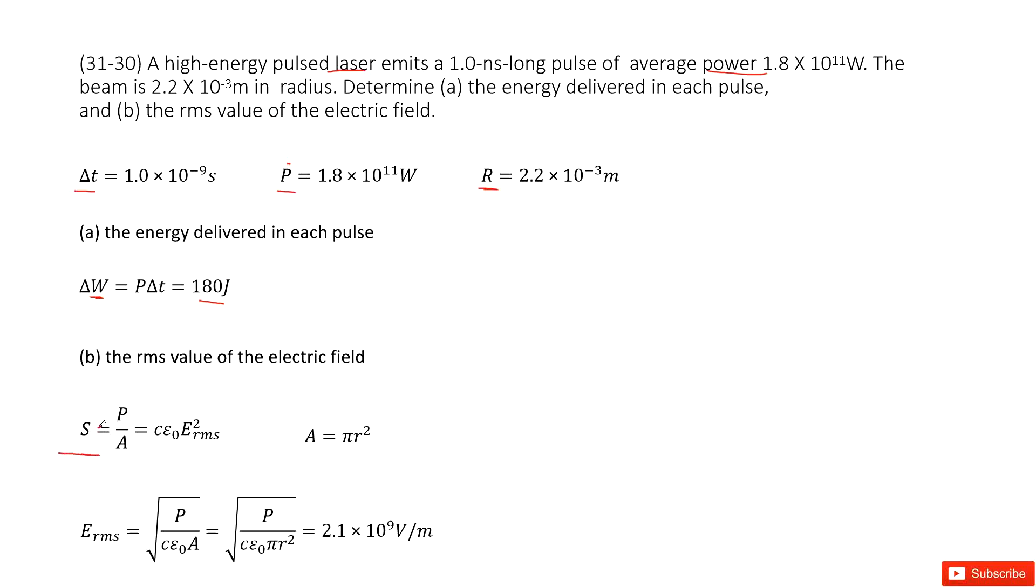As we know, by definition, Poynting vector is power divided by the area. And luckily, it tells you the radius of the beam there, so you can get the A as π R squared.